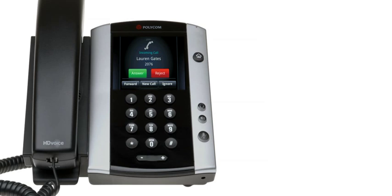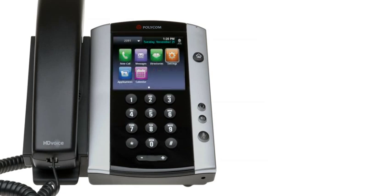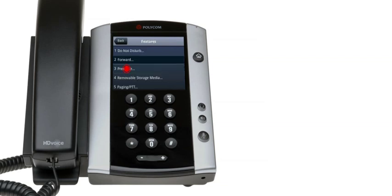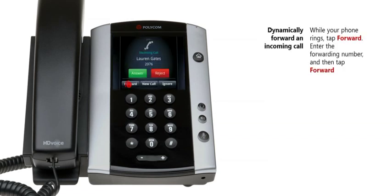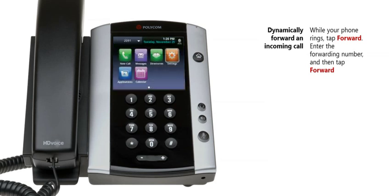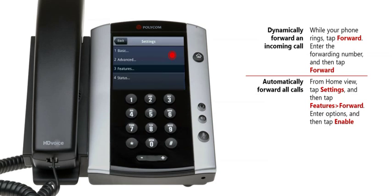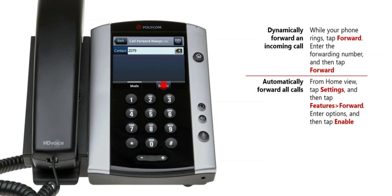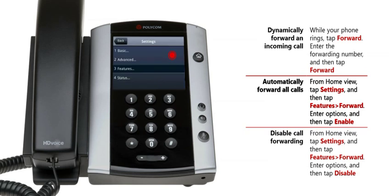You have several options for forwarding incoming calls, including dynamically forwarding an incoming call to another number as your phone rings. Or, you can set up call forwarding in advance, so it applies to all incoming calls. When you no longer want to forward calls, you can disable call forwarding. To dynamically forward a call as your phone rings, tap forward. From the call forwarding screen, enter the phone number you want to forward the call to, and then tap forward. To enable call forwarding for all incoming calls, from home view tap settings, then tap features, forward. Tap the condition under which you want to forward calls, such as always, no answer, or busy. Enter the forwarding number, and then tap enable. To disable call forwarding, from home view tap settings, then tap features, forward. From the forwarding type select screen, tap the type of forwarding to disable, and then tap disable.